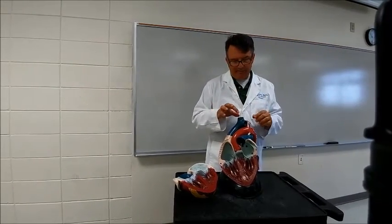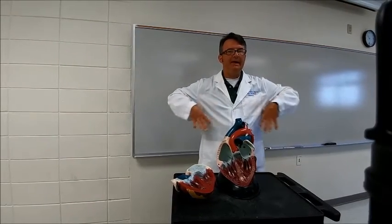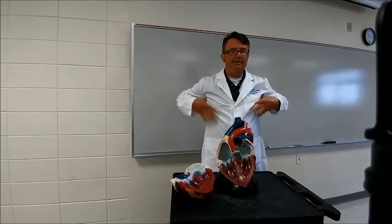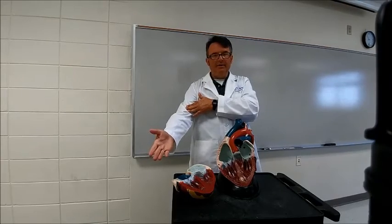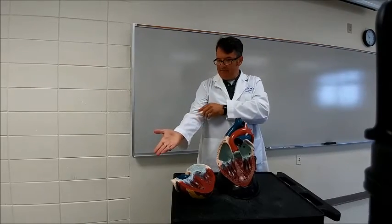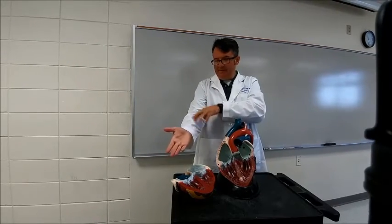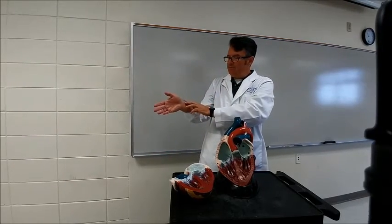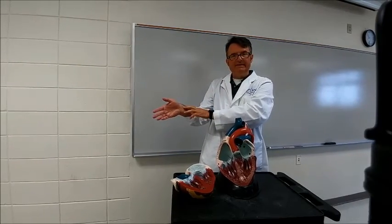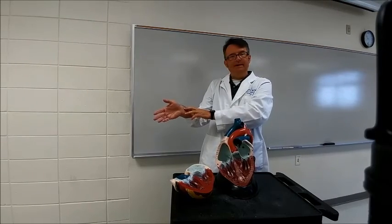Going down the arm we have right and left subclavian arteries, which become the axillary artery — axillary literally means armpit — then the brachial artery. From the brachial it splits into the ulnar and the radial arteries. The radial is the one we press against the radial bone to get a pulse.